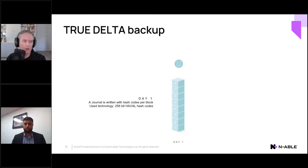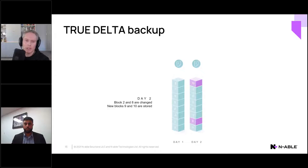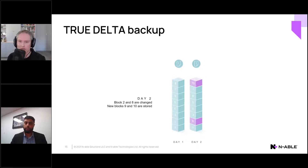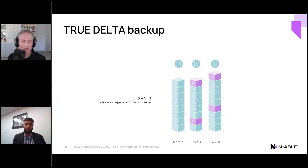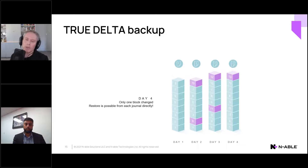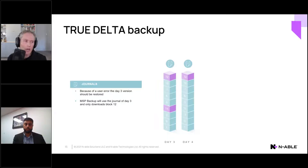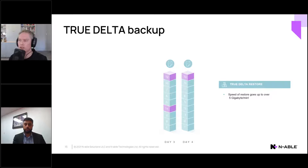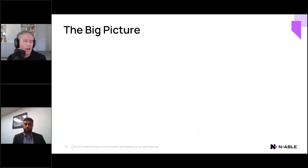On day three the file gets a bit larger with another block or two introduced; day four, same sort of story with day-to-day changes. If we need to do a restore — say there was a problem on day four and we need to recover from day three — we just pull the specific block we need, not the whole block stack. In this case, block 12 replaces block 13 and we recover the file that way. You get the speed benefits of recovering just a tiny portion of the file — that's your delta technology working in reverse.